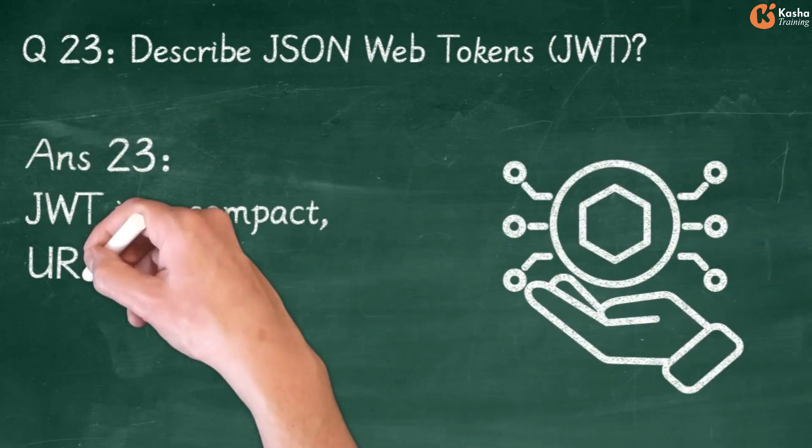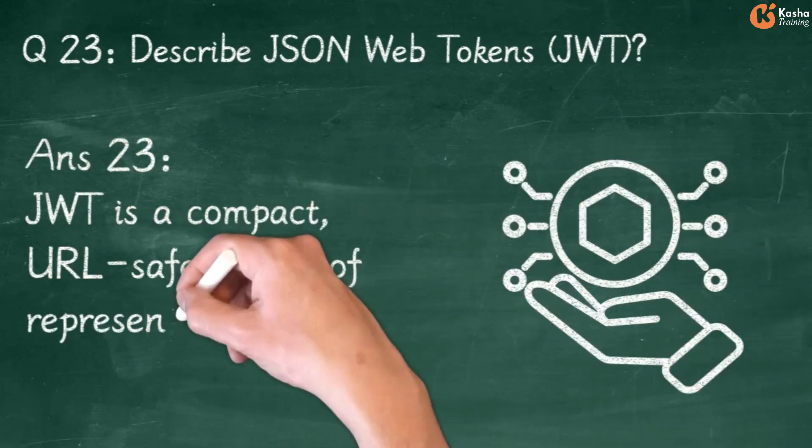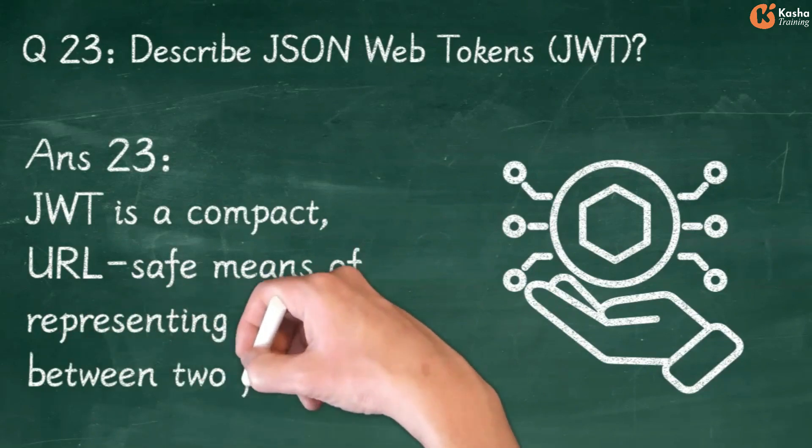Answer 23: JWT is a compact, URL-safe means of representing claims between two parties.